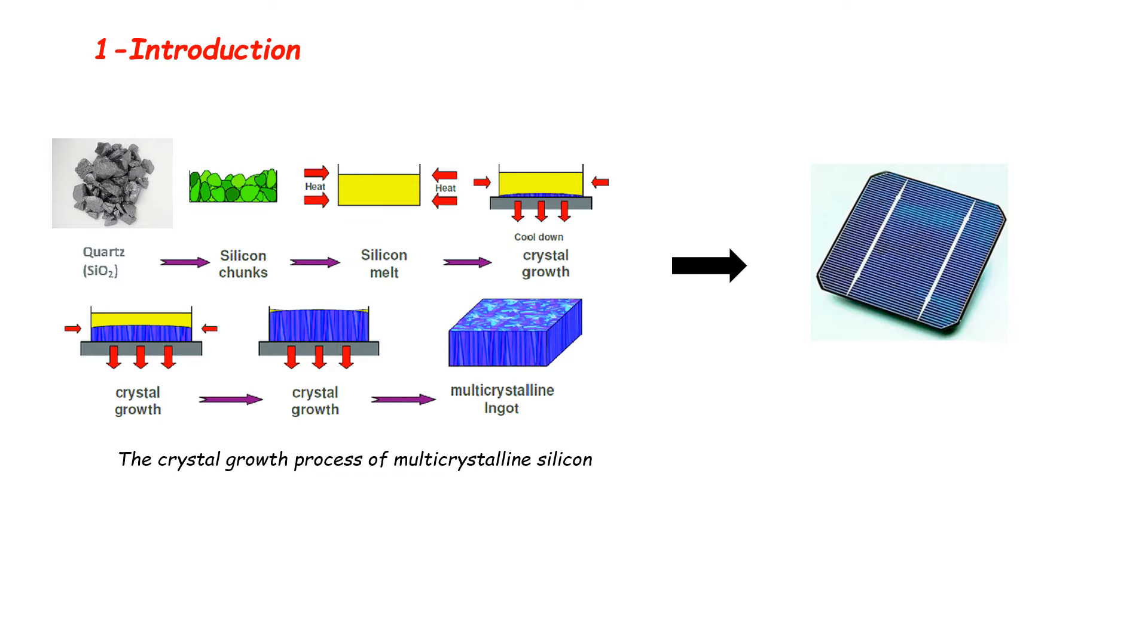Directional solidification is the most commonly used method for growing multicrystalline silicon in photovoltaic industry. The efficiency of solar cells is fully dependent on the quality of the silicon, which is related to the growth conditions.